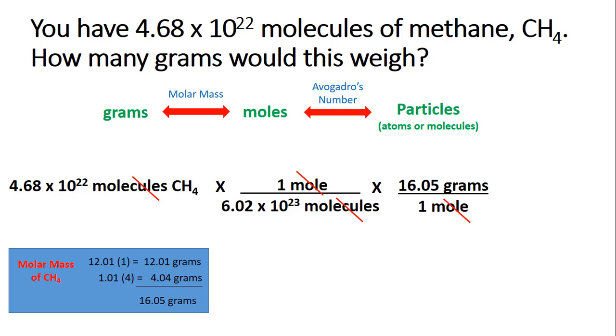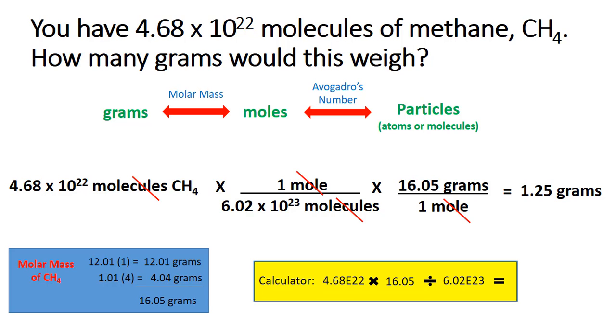Using our calculator, be really careful with these exponents. In my calculator, I would type in 4.68. Use that second function button, which would give us e to the 22nd, so times 10 to the 22nd power. Let's multiply by whatever else we see in the numerator, which is 16.05, and then divide by 6.02 times 10 to the 23rd, being careful to put that in our calculator in the correct way. When we select enter, you should get an answer of 1.25 grams as your answer.